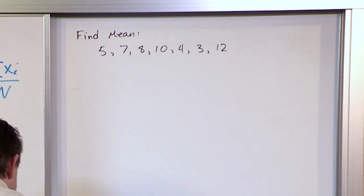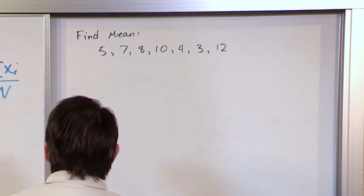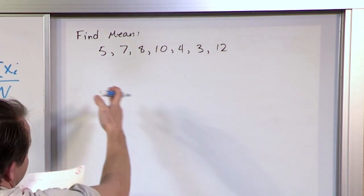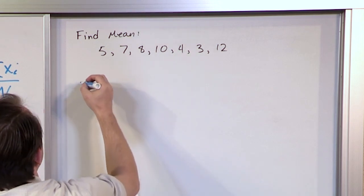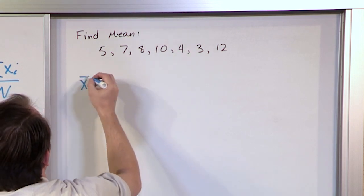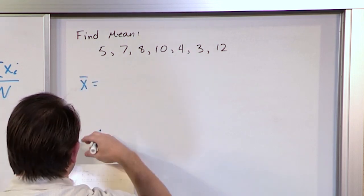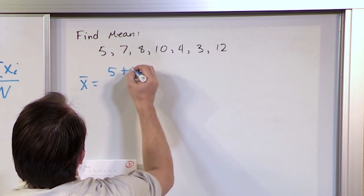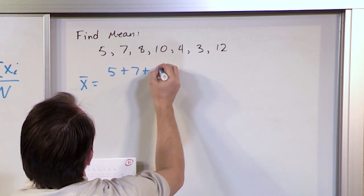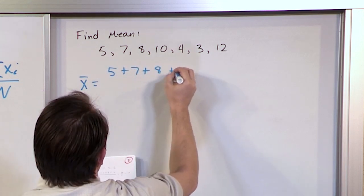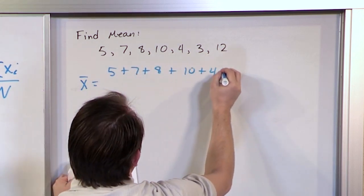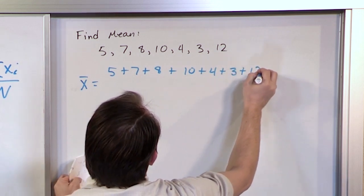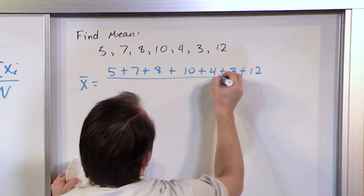We want to find the mean of this data set. These are presumably samples, because it's a very small amount here. So we will say that x̄, which is our sample mean — we're going to add all these guys up: 5 plus 7 plus 8 plus 10 plus 4 plus 3 plus 12.